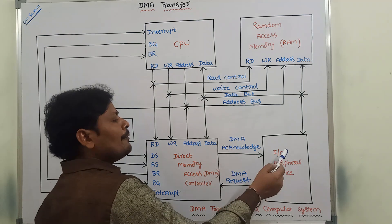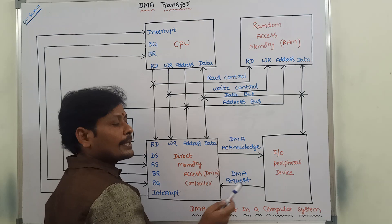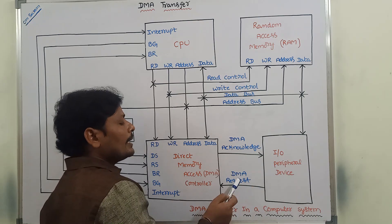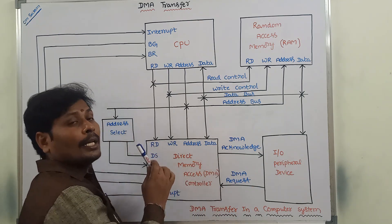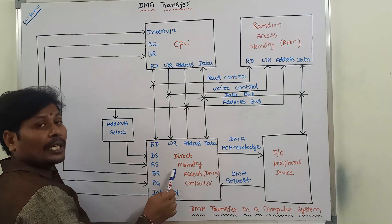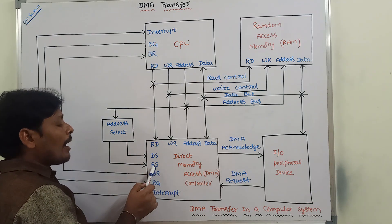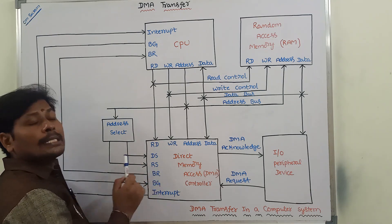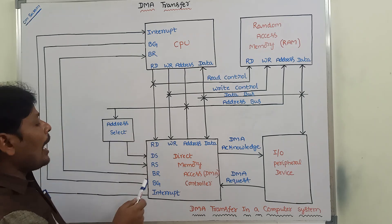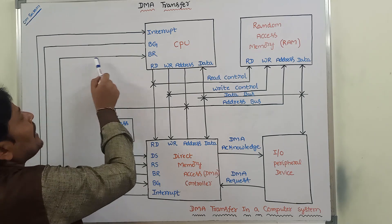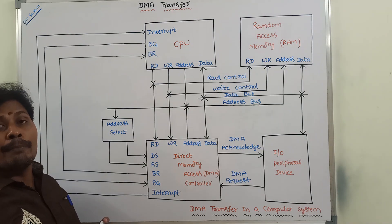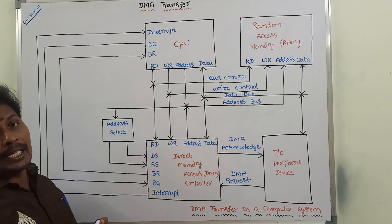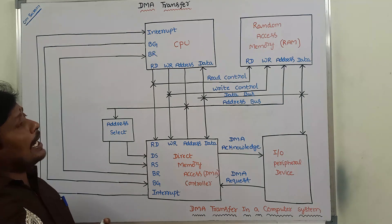When the I/O peripheral device sends a DMA request to the DMA controller, the DMA controller activates the bus request line and asks the CPU to release the control over the memory buses, such as the address bus and data bus.